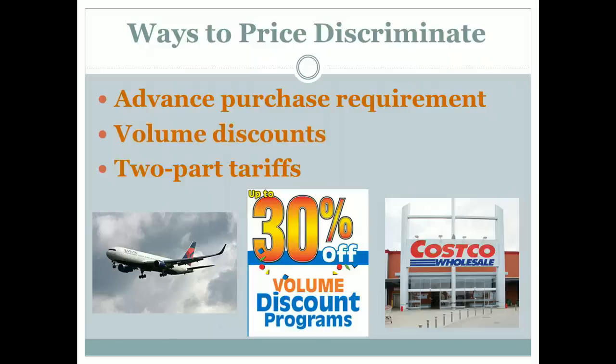Volume discounts are another method. Convincing people who are more price sensitive and worried about unit costs to purchase more — they'll buy more things. And if you're not price sensitive, you're just going to go ahead and buy it at the regular price, which is also fine with the monopolist because they're going to be able to maximize their profit.